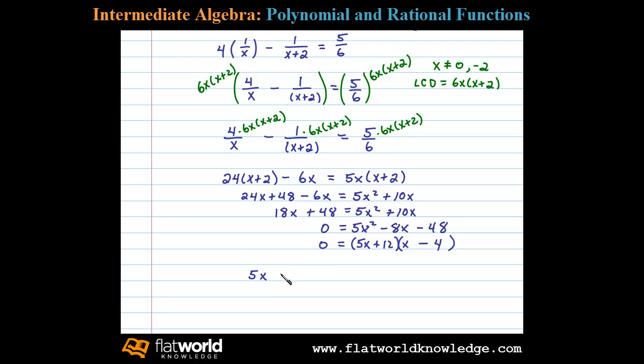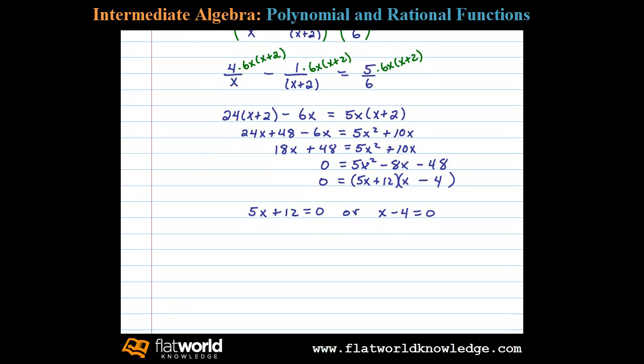So 5x + 12 equals 0, or x minus 4 equals 0. 5x equals negative 12, or x equals negative 12/5.